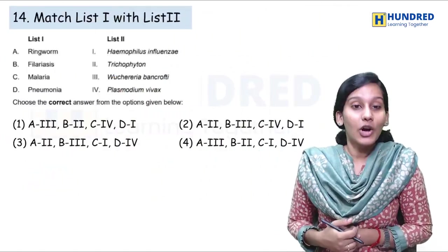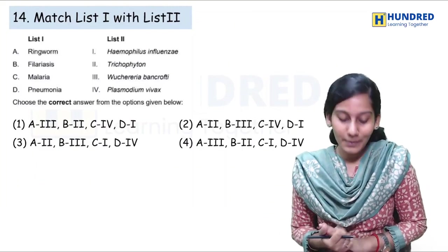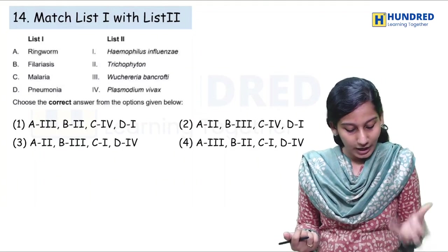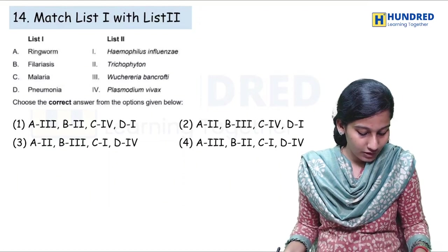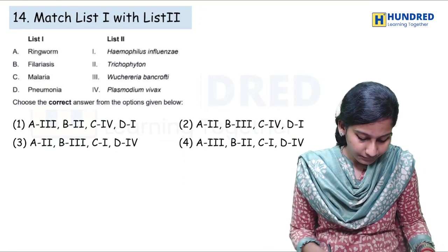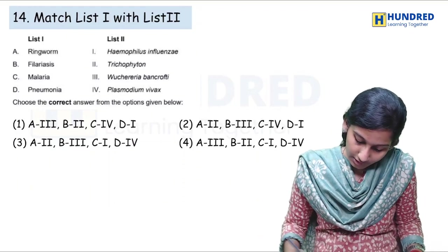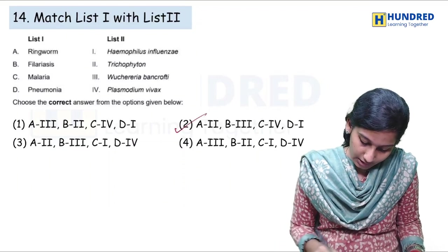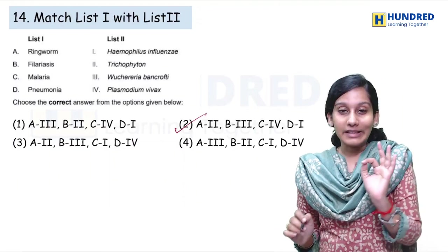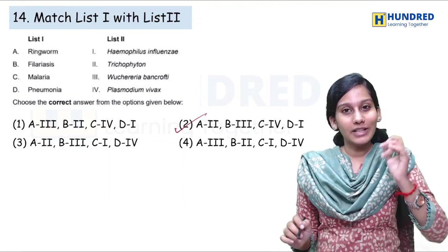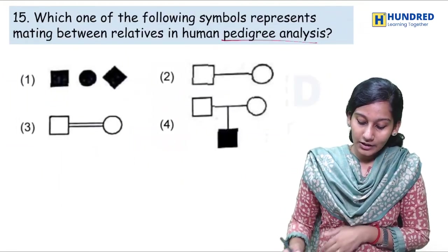Next: these are the diseases and the associated organisms — which organism causes what? Ringworm is a fungal disorder caused by Phycophyton; filariasis by Wuchereria bancrofti; malaria by Plasmodium vivax; and pneumonia is caused by Haemophilus influenzae. Which is the right answer? Option 2 — yes, the right answer is option 2. But you need to put it in the book — those diseases and their organisms.